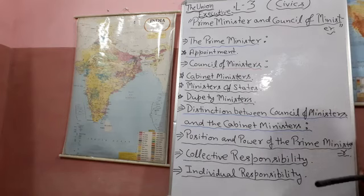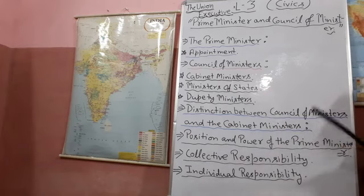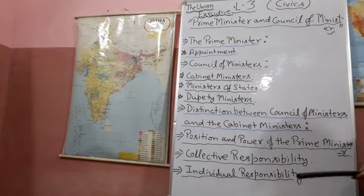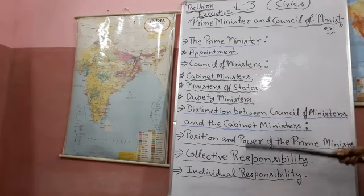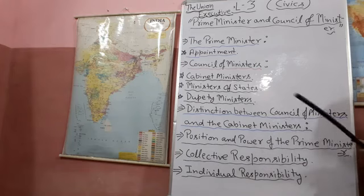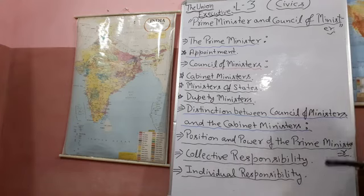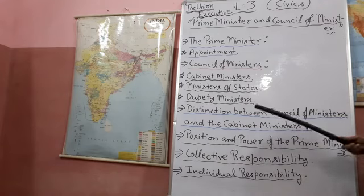Now let me explain Individual Responsibility. Though the Ministers are collectively responsible to the Lok Sabha, they shall be individually responsible to the Head of State. The Ministers hold office during the pleasure of the President, which implies that Ministers shall be liable to be dismissed by the President for their undesirable activities. However, in these matters the President acts on the advice of the Prime Minister. Usually, because of something that the Minister has done, the Prime Minister asks him to resign, which he readily does. Besides, every Minister is obliged to answer questions pertaining to his department.